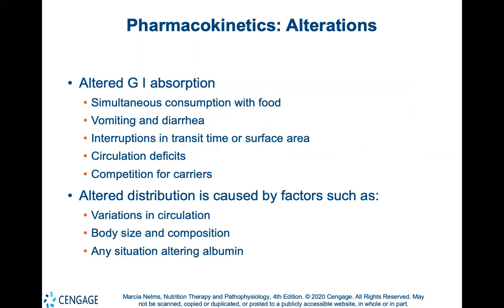No two people will react in the same way to any given medication. Altered health conditions, disease, and treatment can interrupt normal GI absorption processes. A common factor that may change the effectiveness of absorption is consumption of food simultaneously with medication. The presence of food stimulates normal digestion and absorption mechanisms, such as changes in the rate of gastric emptying and the release of enzymes and hydrochloric acid. Vomiting and diarrhea can influence drug absorption by reducing the time available for solubility and dissolution. Disease or health conditions that interrupt normal transit time or surface area decrease drug absorption. Drugs, nutrients, and other substances may also compete for the carriers needed for active transport across a cell membrane. Major factors that change distribution of a drug include variations in circulation, body size, body composition, and protein binding of the medication.